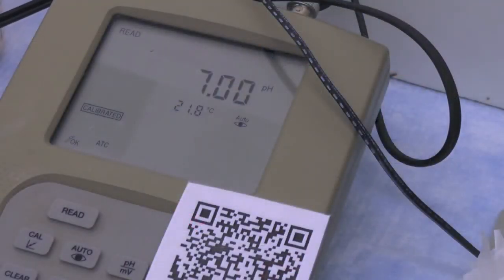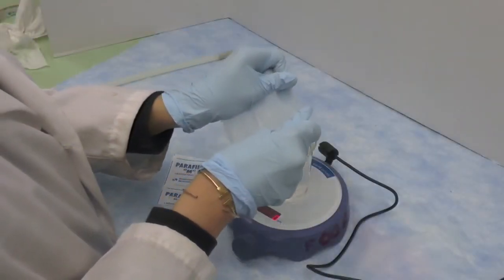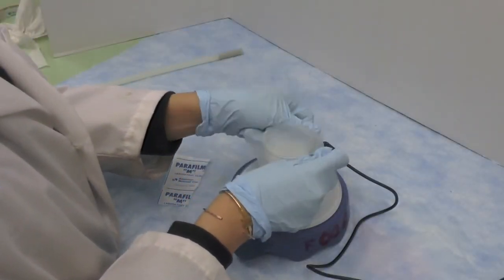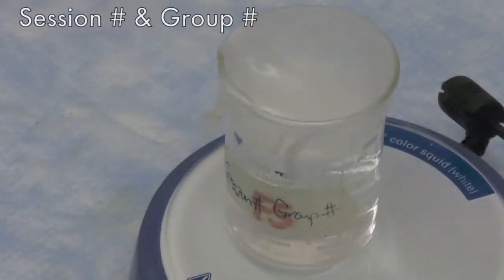Once pH 7.0 is reached, cover the beaker with paraffin, label clearly with your session number and group number and submit to your TA.